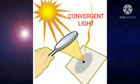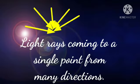Our next term is convergent light. C-O-N-V-E-R-G-E-N-T convergent. L-I-G-H-D light. Convergent light. In this, you can see the light rays coming to a single point from many directions. You can easily understand it with the help of this example.